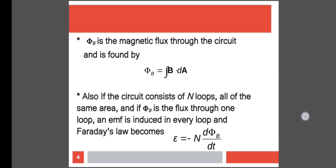If the circuit consists of N number of loops and all are of the same area, then an EMF is produced in every loop for the flux phi B. So Faraday's law becomes epsilon is equal to negative of N into d phi B by dt. For the flux phi B in every loop, an EMF is induced. So for N number of loops, there will be N times the EMF produced in one loop.